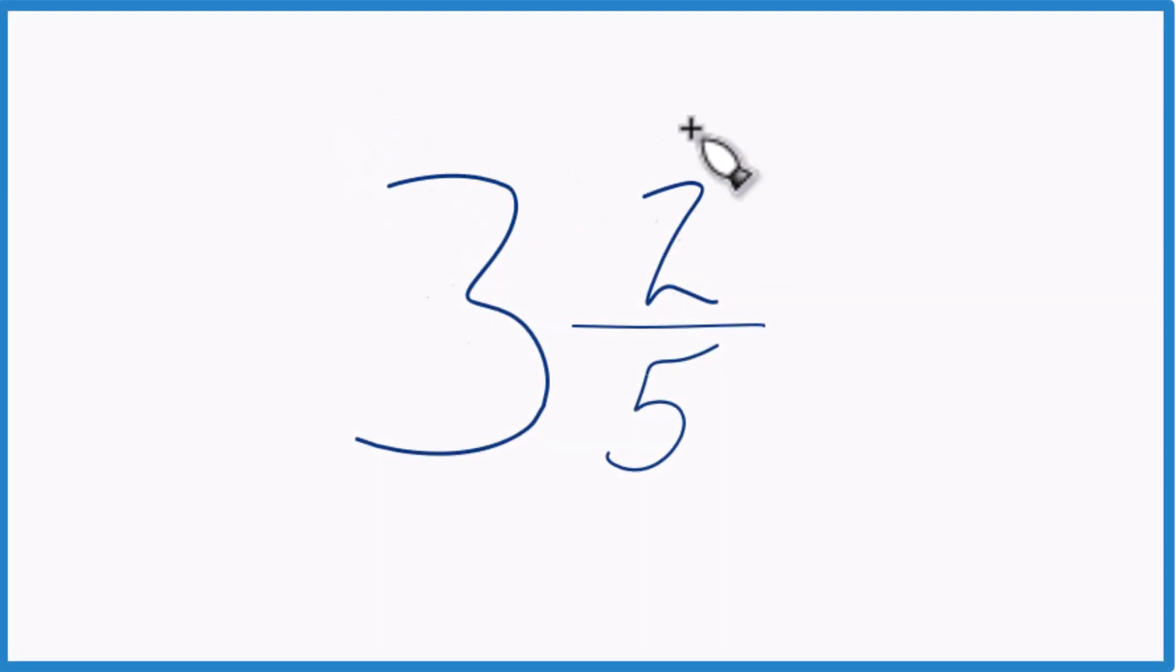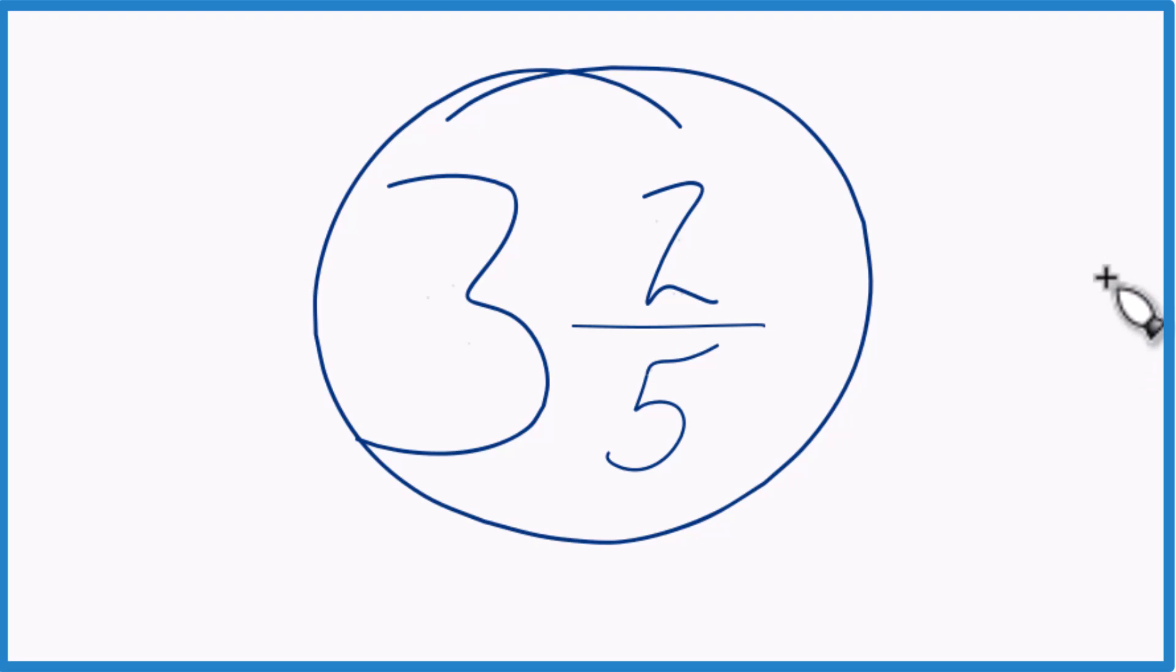If you're given the mixed number 3 and 2 fifths, and you need to get that to an improper fraction, here's how you do it.